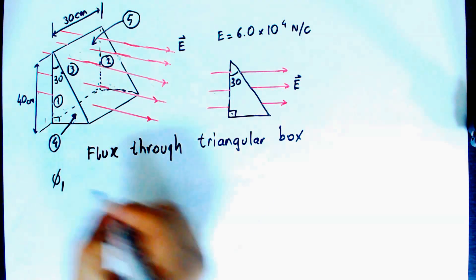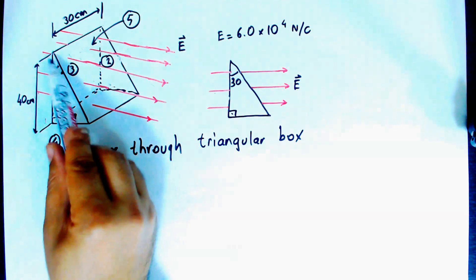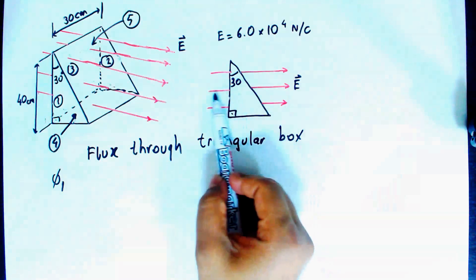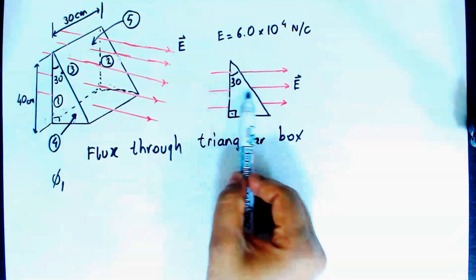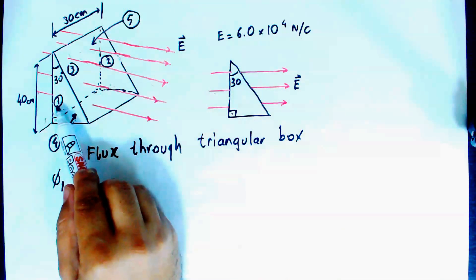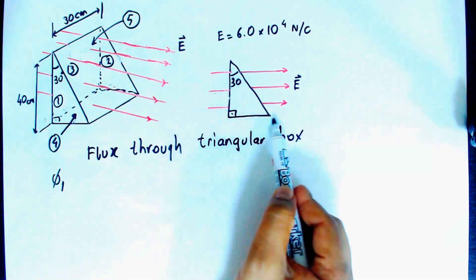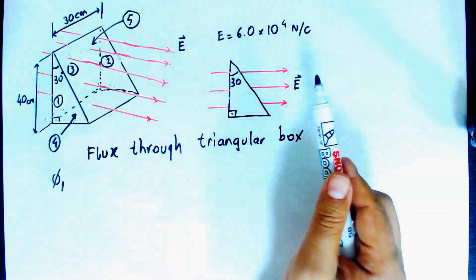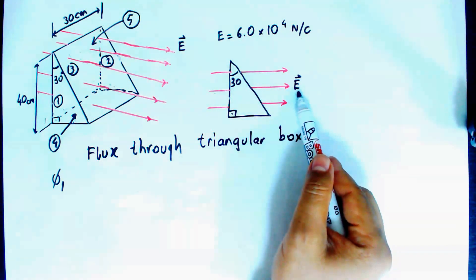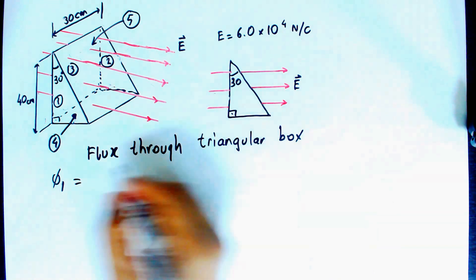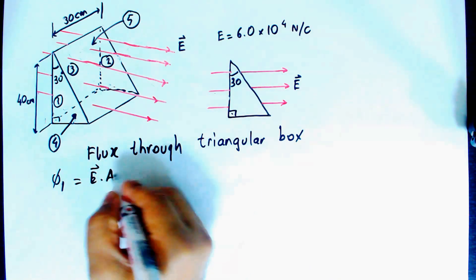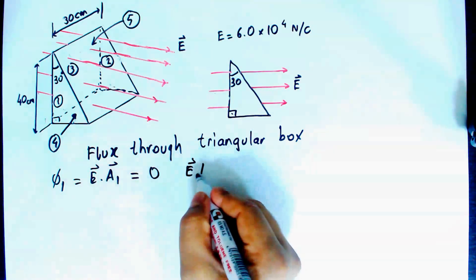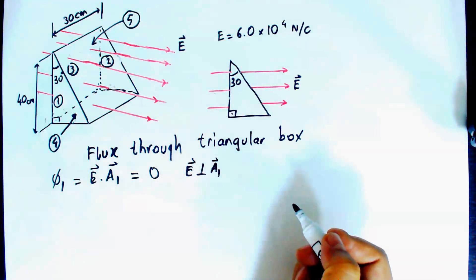Flux one is the flux through face one, the right triangular face. As you can see from the picture, the field lines are going parallel to the surface of face one. The area vector of face one points out of the page, making a right angle with the electric field. So flux one equals E dot A₁ equals zero, because the electric field and area vector are perpendicular to each other.